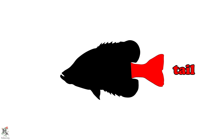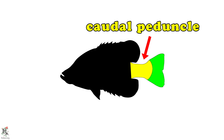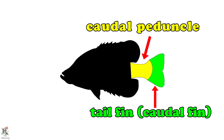The tail of the fish is a generic term used to refer to the caudal peduncle, or the portion of the body where the dorsal and anal fins end, as well as the tail fin, or caudal fin.